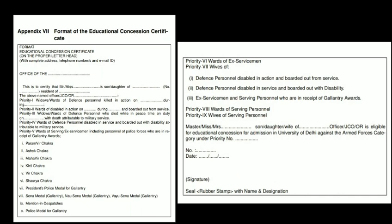Another doubt students have is: 'Ma'am, how much time does it take to get this made?' It will take some time — it is not like you go and the work is done immediately. First you have to get everything typed and take it there, then they will put it on their letterhead. After that they will check your proofs — the valid proofs will be verified to confirm you actually fall under this category — because they are signing on their responsibility that they have checked everything and you genuinely belong to the armed forces wards or widows category. So obviously this will take some time, so if you haven't started yet, start the process as soon as possible.